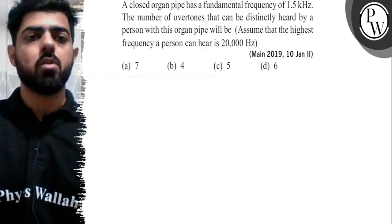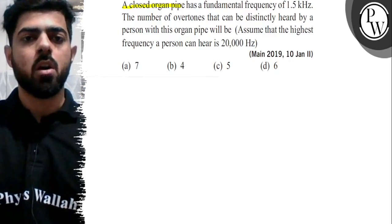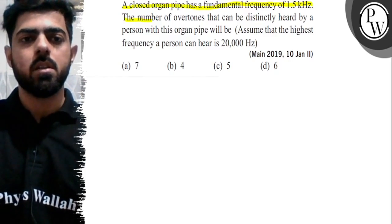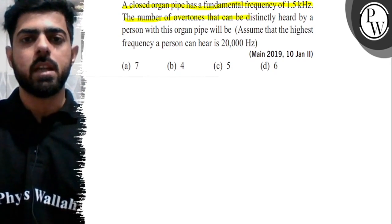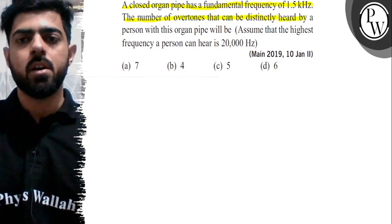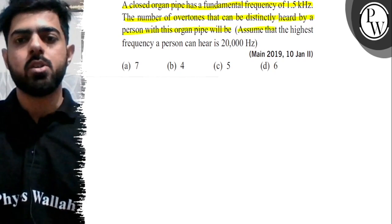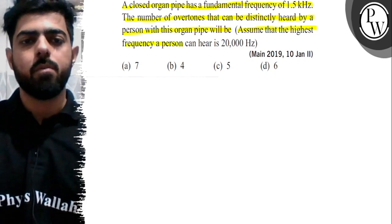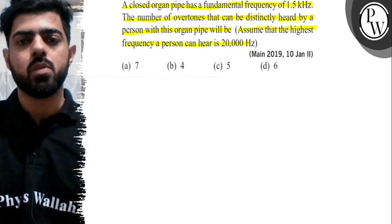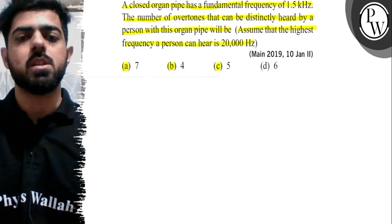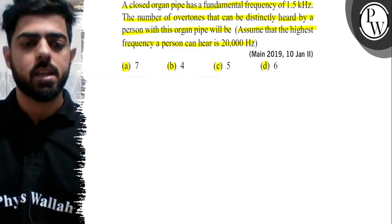Hello, let's read the given question. A closed organ pipe has a fundamental frequency of 1.5 kHz. The number of overtones that can be distinctly heard by a person with this organ pipe will be? Assume that the highest frequency a person can hear is 20,000 Hz. The options are: (a) 7, (b) 4, (c) 5, and (d) 6.